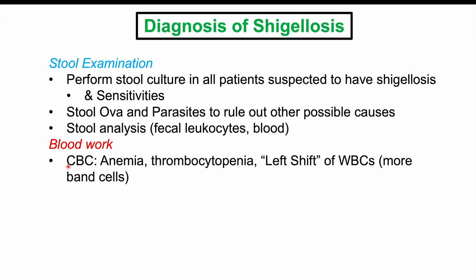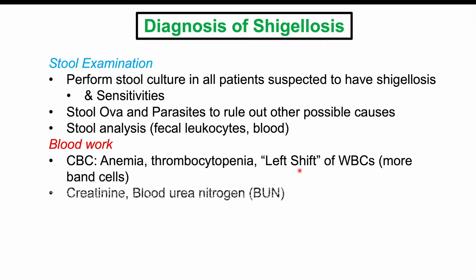Blood work can also be performed. A complete blood count will show anemia, thrombocytopenia, and a left shift of white blood cells — meaning more immature leukocytes. A left shift of leukocytes is an important finding in this condition.